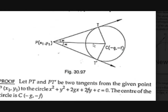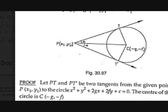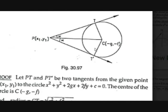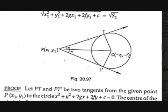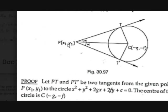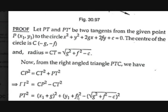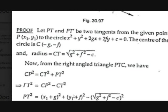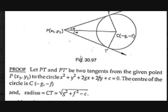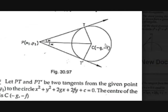From that, CP is the hypotenuse. So hypotenuse² = sum of squares of the sides: CP² = PT² + CT². Therefore PT² = CP² − CT².